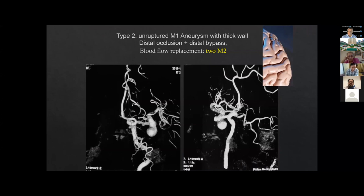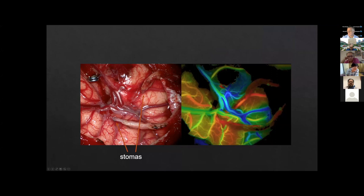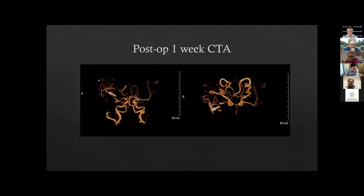This is type two: an unruptured M1 long segment aneurysm with a thick wall. For this kind of patient, we can consider distal occlusion combined with distal bypass. The blood flow replacement should cover two M2 branches. We used a temporary clip to clip the different branches of the distal MCA, then selected the recipient artery and performed end-to-side anastomoses. The final result showed double bypass was all patent and the blood flow of the parent artery was totally replaced. After one week, CTA showed the aneurysm was no longer visible.